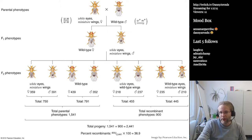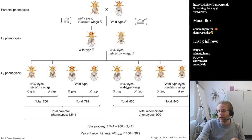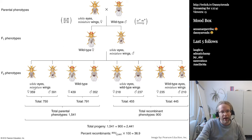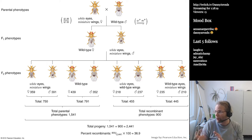This is the F1 generation. When we cross these wild-type females — who are not really wild-type because they have two different copies — to the males we get, we get the F2 generation. Something interesting happens in the F2: we suddenly see an explosion of variants. We see white-eyed miniature-wing females, males with white eyes and miniature wings, wild-type females and wild-type males, white-eyed females with normal wings, males with white eyes and normal wings, and individuals with wild-type eyes and miniature wings. This breaking up is due to recombination.